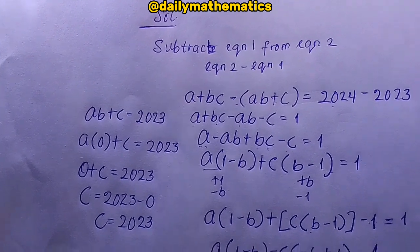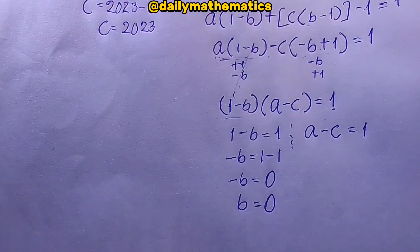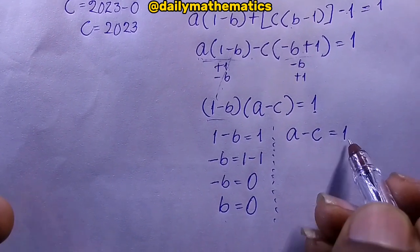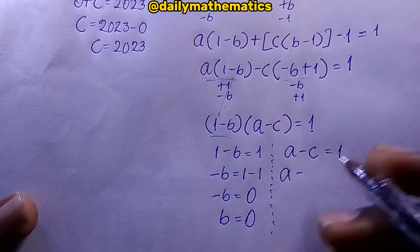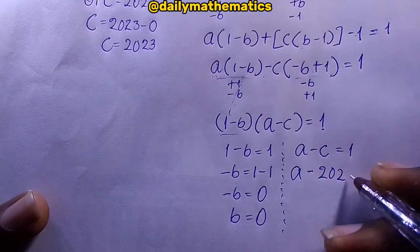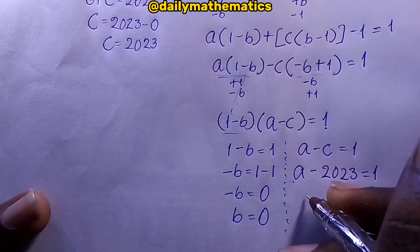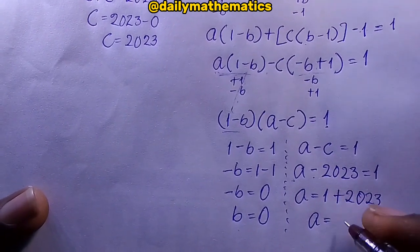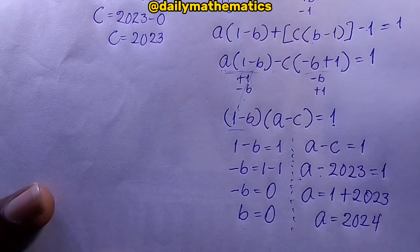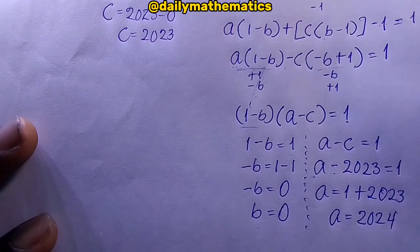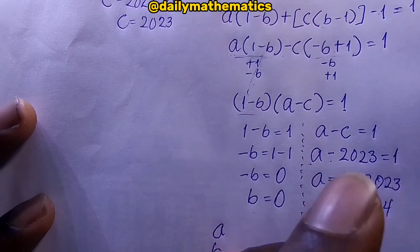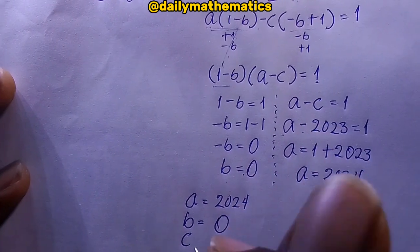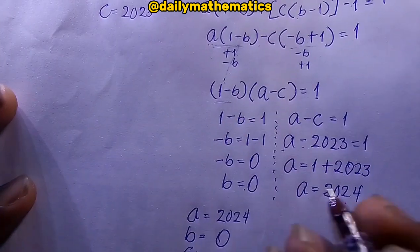Substituting b equals 0: a times 0 plus c equals 2023, so 0 plus c equals 2023, giving c equals 2023. Now substituting c equals 2023 into a minus c equals 1: a minus 2023 equals 1, so a equals 1 plus 2023, which gives a equals 2024. Our answers are a equals 2024, b equals 0, and c equals 2023.